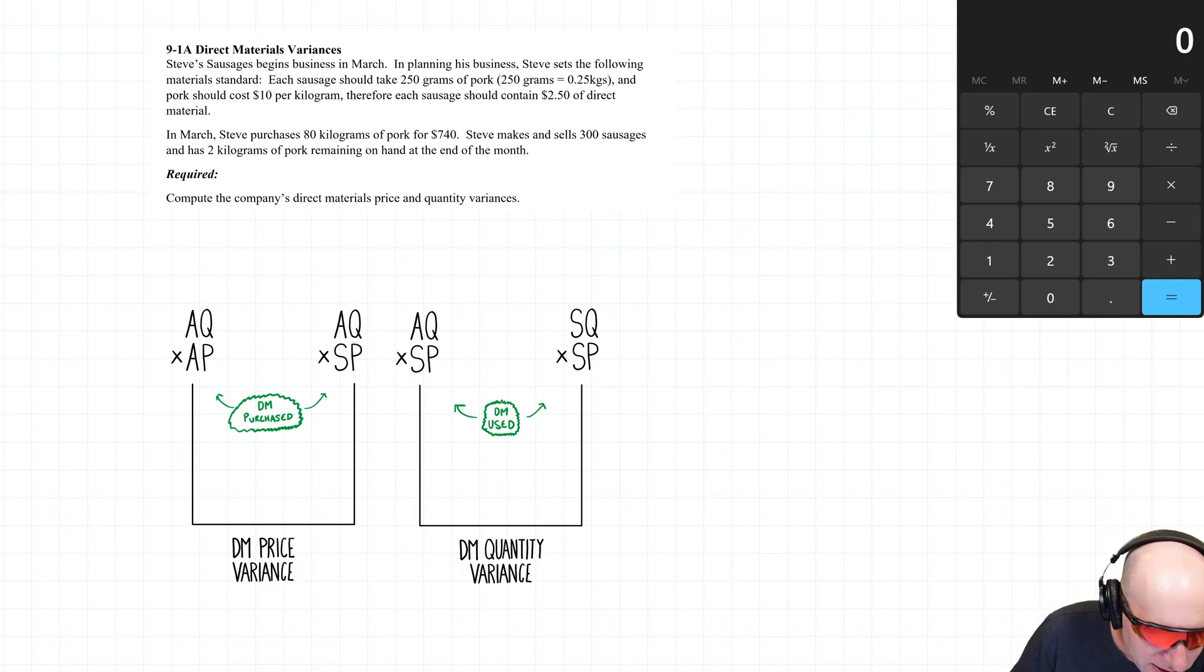Steve's sausages begins business in March. In planning his business, Steve sets the following materials standards. Okay, we're going to need to know our standards versus our actuals. That's what materials or any variance is all about. Each sausage should take 250 grams of pork and 250 grams is 0.25 kilograms and pork should cost $10 per kilogram. Therefore, each sausage contains $2.50 of direct material or should contain $2.50 of direct material. In March, Steve purchases 80 kilograms of pork for $740. Steve makes and sells 300 sausages and has 2 kilograms of pork remaining on hand at the end of the month.